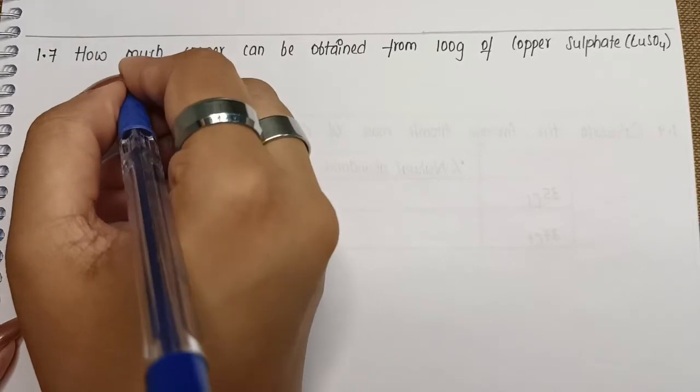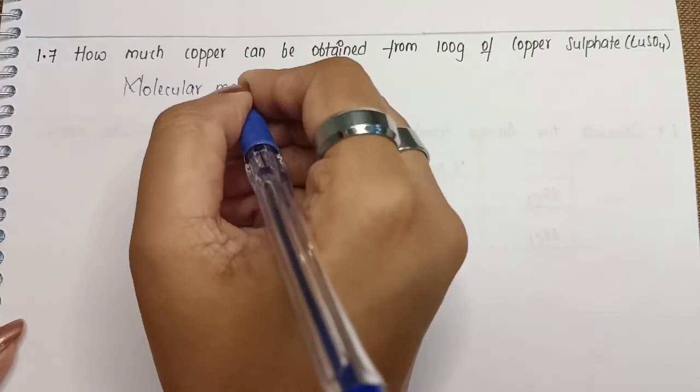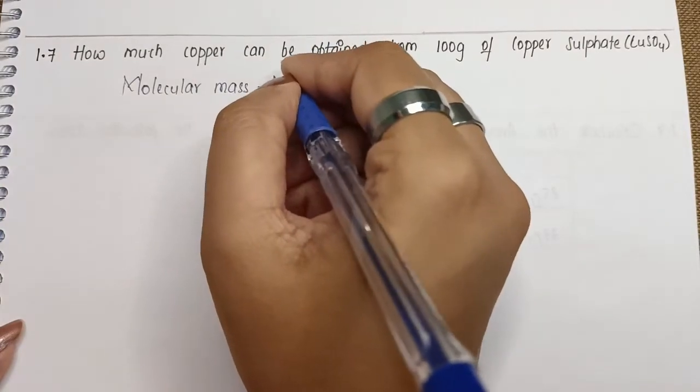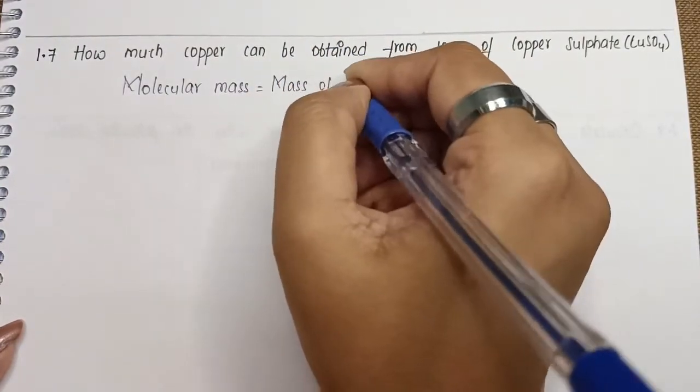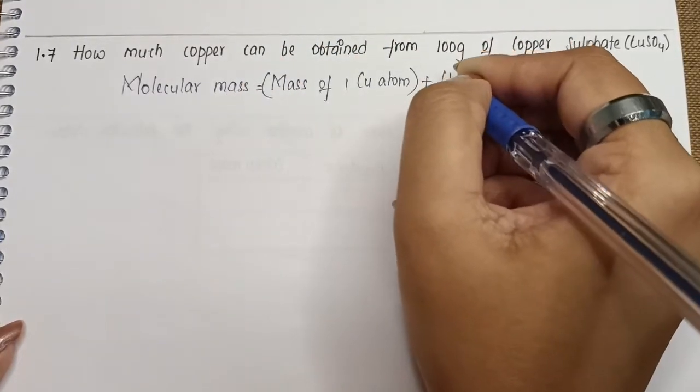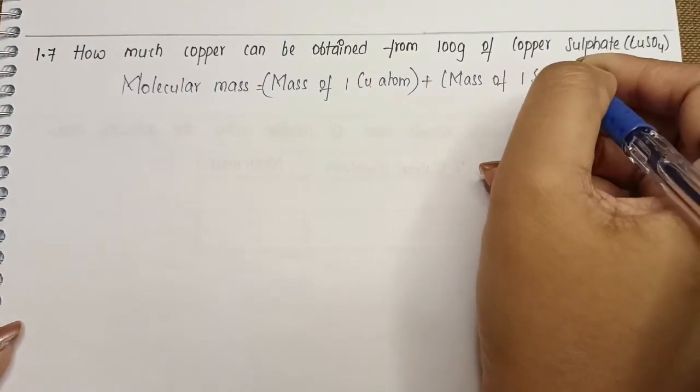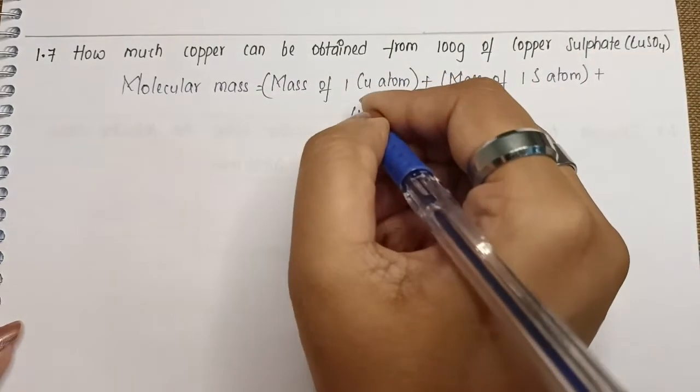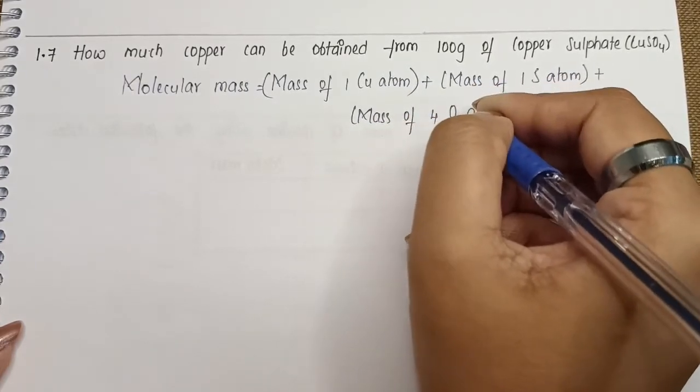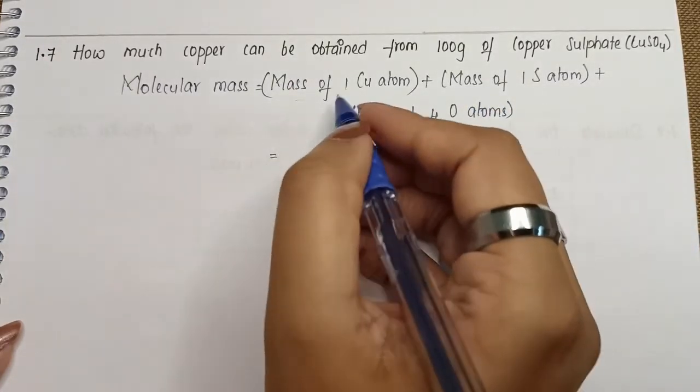So here we will write down molecular mass of copper sulphate is equal to mass of one copper atom plus mass of one sulphur atom plus mass of four oxygen atoms.